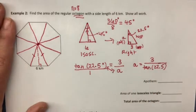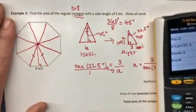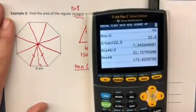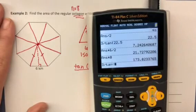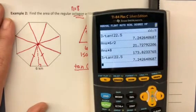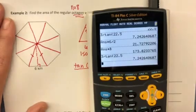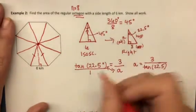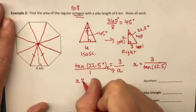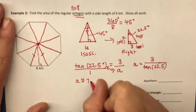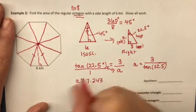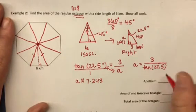All right. So we do need our calculator. Mine should already be in degrees from earlier. Three divided by tangent 22.5. All right. So we get 7.243 if we're rounding. So 7.243. And that's going to be the length of our apothem.